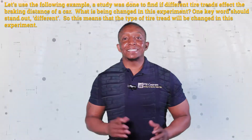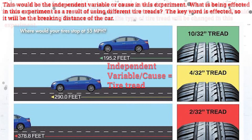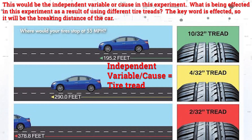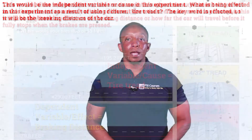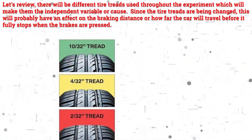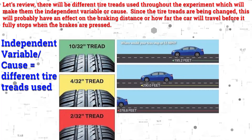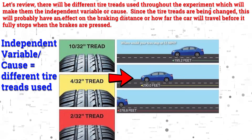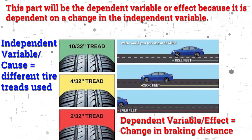Let's use the following example: a study was done to find if different tire treads affect the braking distance of a car. What is being changed in this experiment? One key word should stand out — different. The type of tire tread will be changed, making it the independent variable or cause. What is being affected as a result? The key word is 'affected,' so it will be the braking distance of the car. The braking distance is the dependent variable or effect because it is dependent on a change in the independent variable.